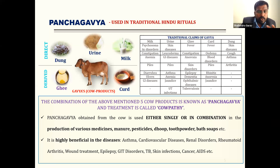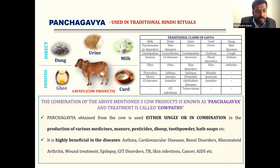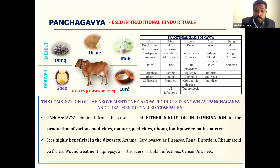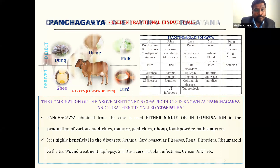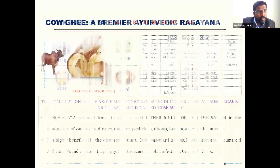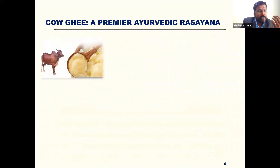Panchagavya is highly beneficial in treatment of asthma, cardiovascular diseases, renal disorders, rheumatoid arthritis, wound treatment, epileptic seizures, gastrointestinal disorders, tuberculosis, skin infection, and even cancer and AIDS — with research evidence already published. Out of all cow products, I will focus on cow ghee. It is one of the oldest and ideal lipid-based delivery systems — a fat-based delivery system — considered ideal for targeting specific body tissues.